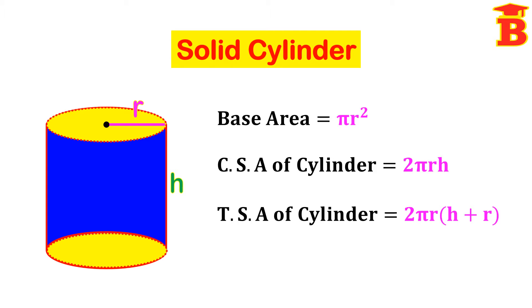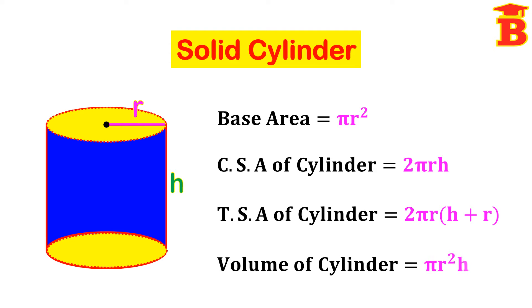Next, the volume of the cylinder. Volume means the space occupied by this shape. So the volume of the cylinder is pi R square H.